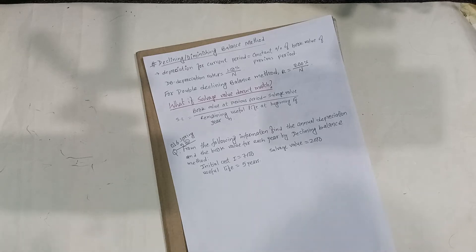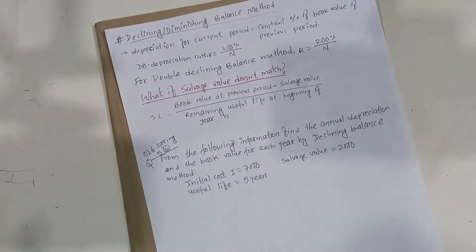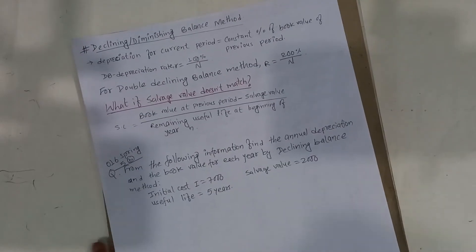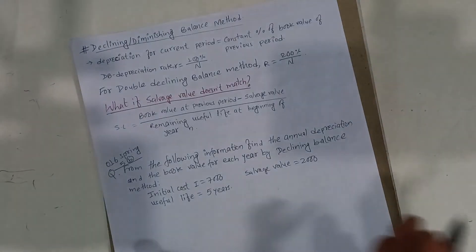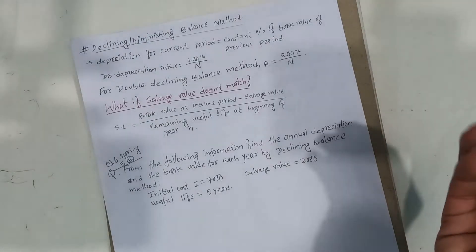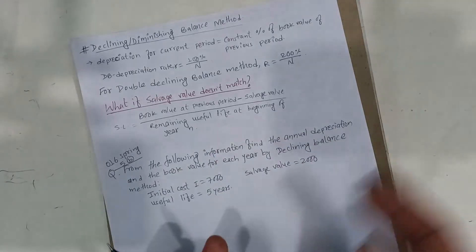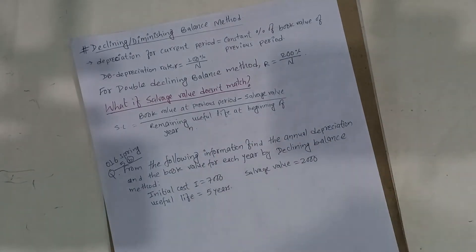Welcome back! This is the declining-diminishing balance method. Depreciation for the current period is equal to a constant percentage of the book value of the previous period. Each year, each period, this constant percentage is applied to calculate the depreciation.